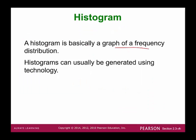A histogram is a graph of frequency distribution. Histograms can usually be generated using technology like Excel, SPSS, SAS, R, and so on. Excel is the most accessible one — everybody has Excel and you can control the histogram using it easily.